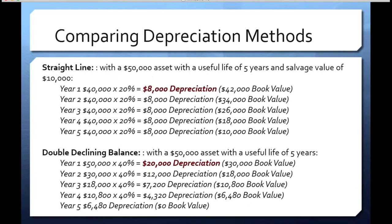It's important to understand double declining balance because in taxes we use the Modified Accelerated Cost Recovery System, called MACRS. MACRS uses the double declining balance concept. In a typical five-year scenario where straight-line would give you 20% per year, MACRS gives you 40% the first year, then reduces over time — giving you a much bigger depreciation up front. That's an important general concept to know because taxes actually use this method.